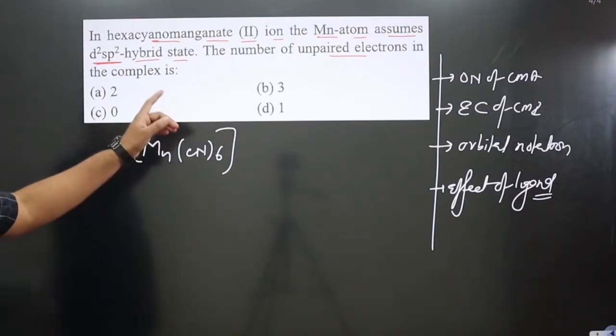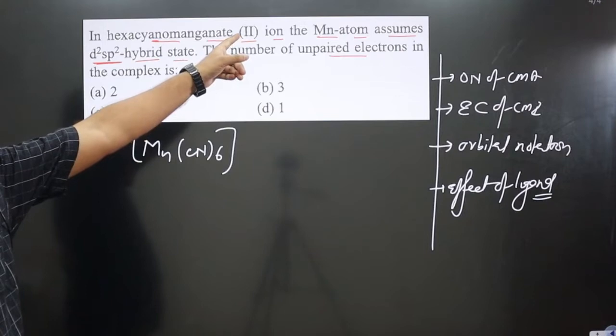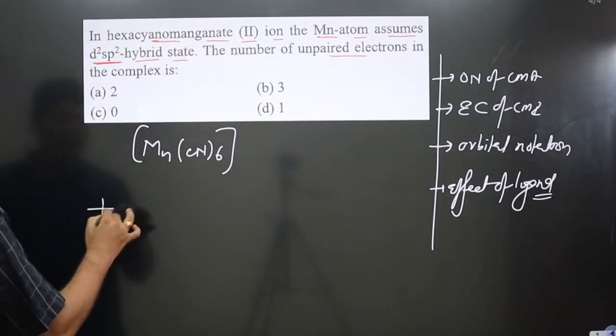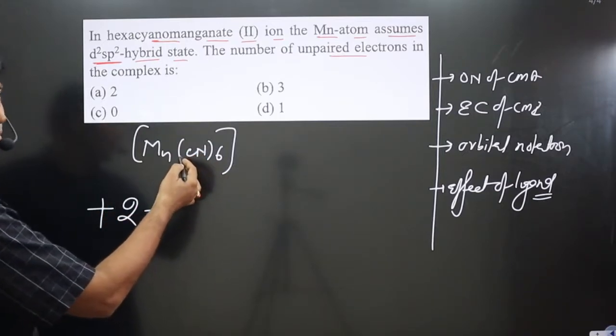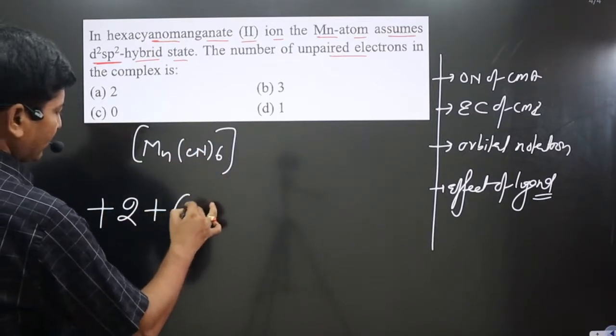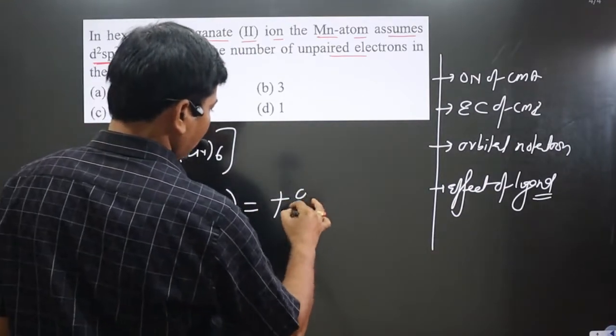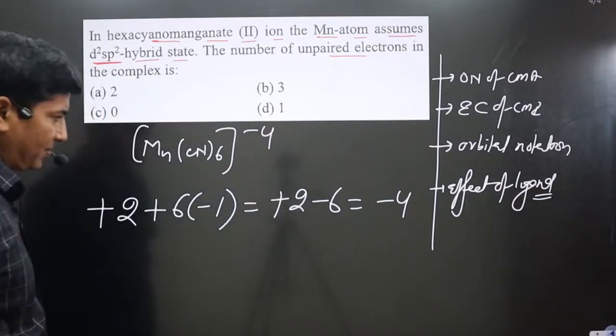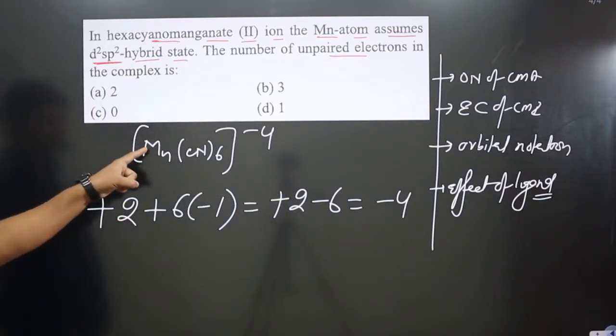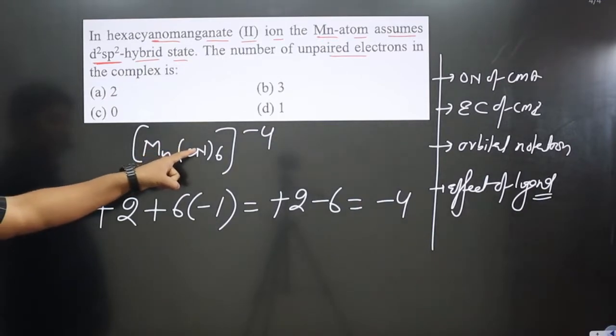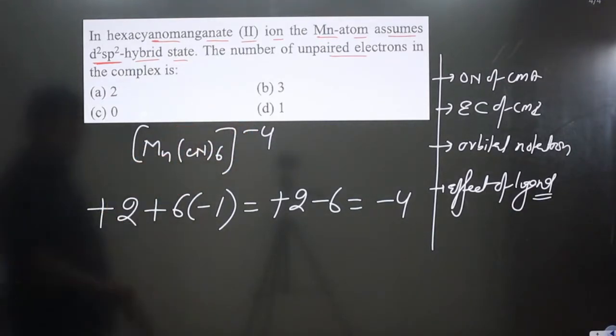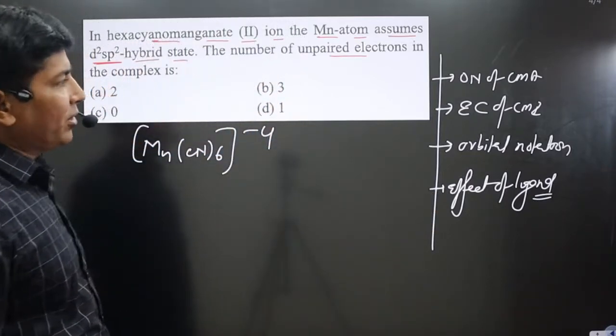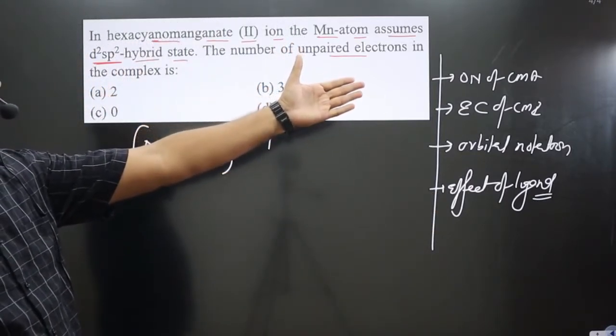The question says manganese is present in +2 oxidation number, but we can calculate: manganese is +2 and cyanide is a neutral ligand—six times -1 gives us +2 - 6 = -4. So the overall charge is minus four. We can plug in the oxidation number of manganese and CN to calculate the overall charge.